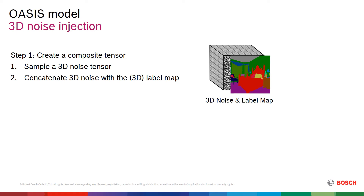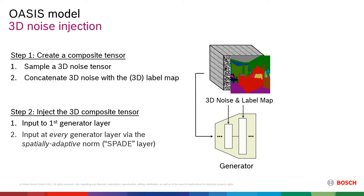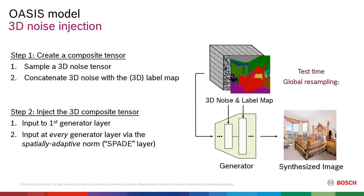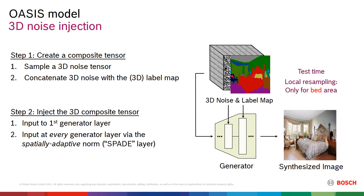At every training iteration, we perform the following steps. First, we sample a 3D noise tensor and concatenate it with the label map. Second, this composite tensor is used as input to the first generator layer and also fed to intermediate layers through spatially adaptive normalization. In effect, the noise is not ignored as it directly modulates activations at each generator layer. By resampling the 3D noise globally, we are able to generate different versions of the same scene, for example of a bedroom. As our 3D noise is spatially sensitive, we can also sample different noise for different regions, which allows changing objects locally, for example only the bed, without affecting other objects.